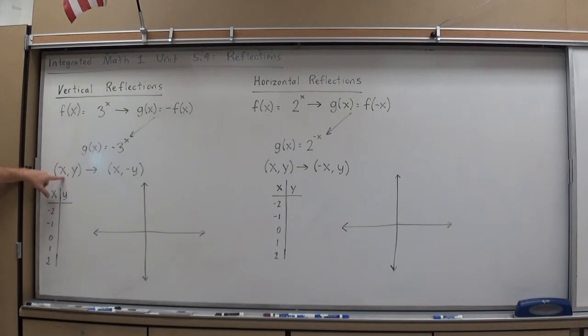What a vertical reflection will do is take all the y values and change their sign. But all the x values in your table will stay the same. So your y would change negative, your x could stay positive.